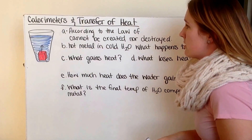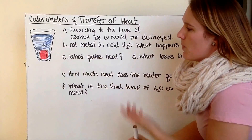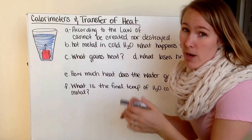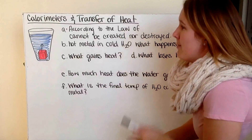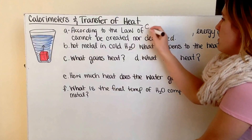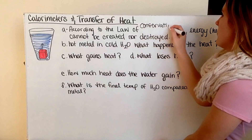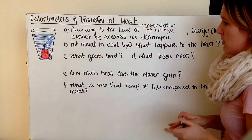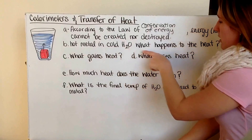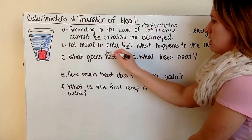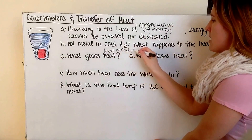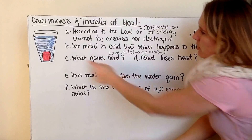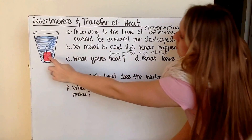Calorimeters and transfer of heat: if we have a glass of water and we put a hot metal object inside it, we know from experience that the metal object is going to get colder and the water around it is going to warm up. This is a property of chemistry. The heat leaves the metal and goes into the water — the water gains heat and the metal loses heat.